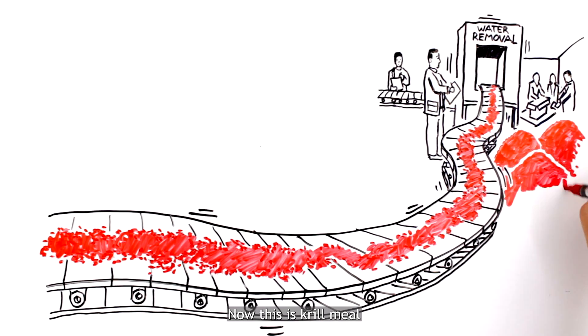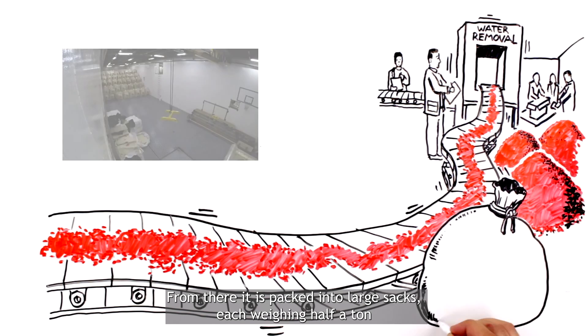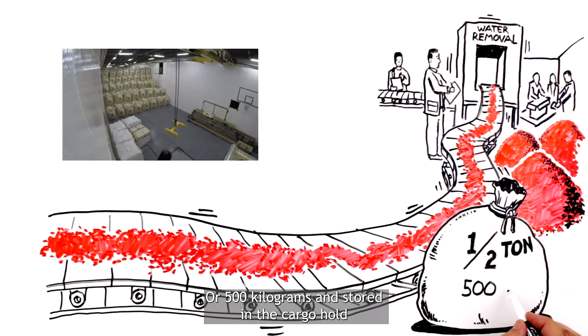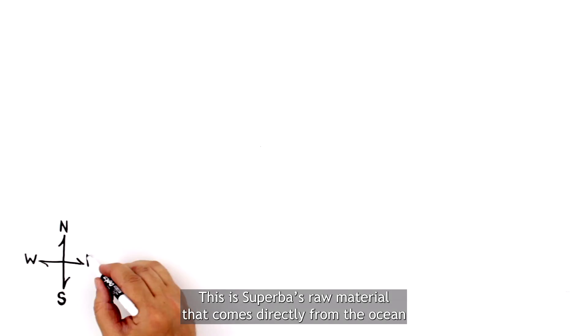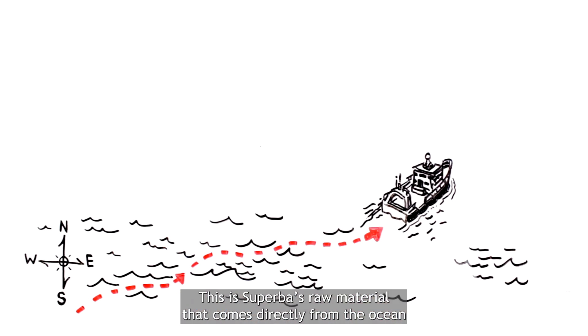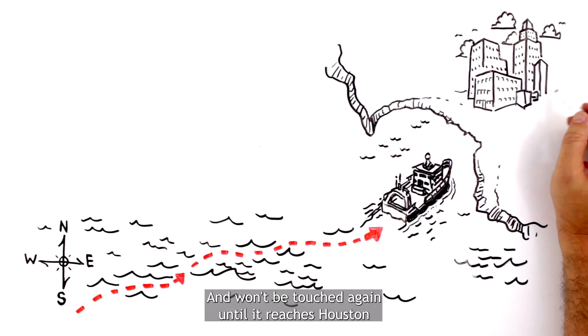Now this is Krill Meal. From there, it is packed into large sacks, each weighing half a ton or 500 kg, and stored in the cargo hold. This is Superba's raw material that comes directly from the ocean and won't be touched again until it reaches Houston.